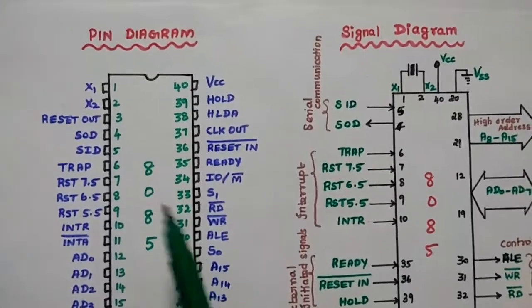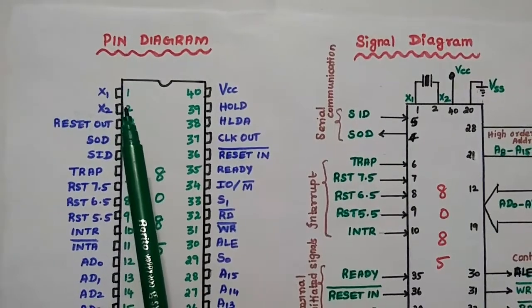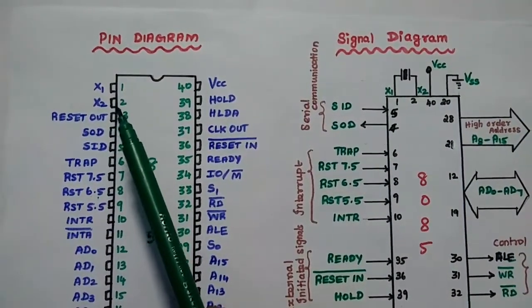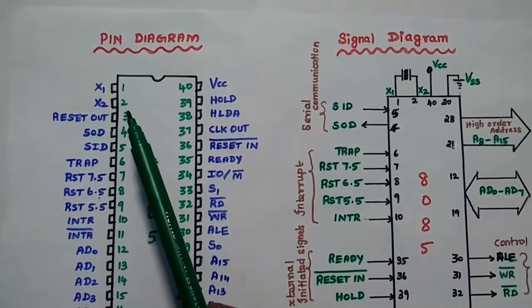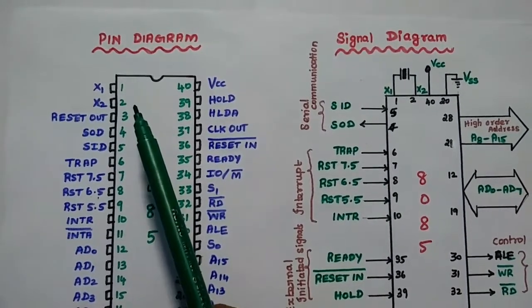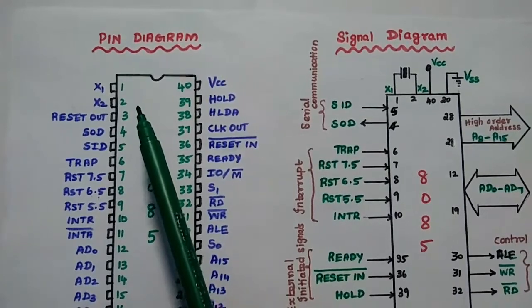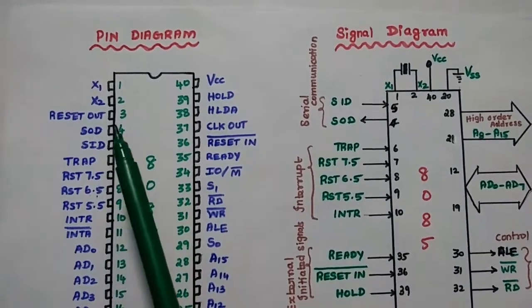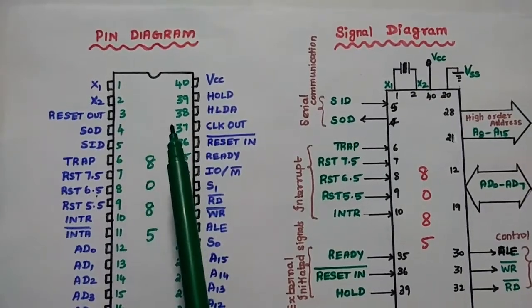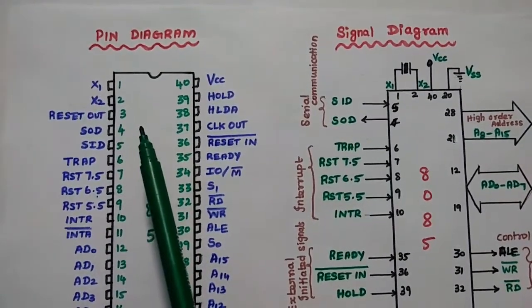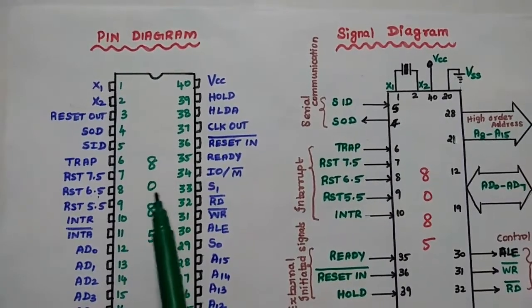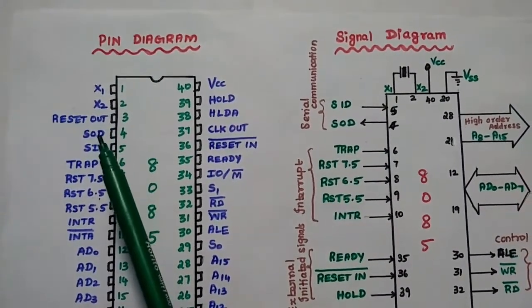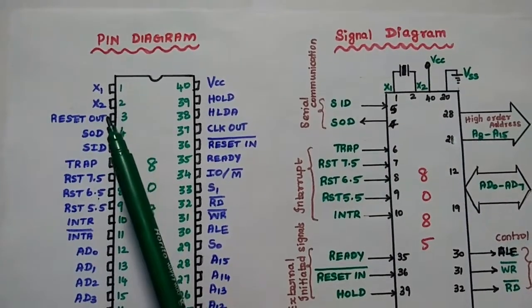Let's discuss each pin. The first pin is X1 and the next pin is X2. These two pins are used to connect a crystal oscillator to generate the frequency for the 8085 processor. The frequency is divided by 2 internally, so if you want to generate 3 MHz for the 8085 processor, you can connect a 6 MHz crystal oscillator between X1 and X2.